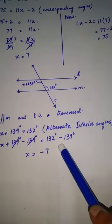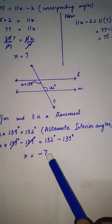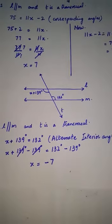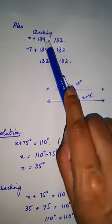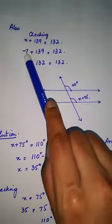when you subtract 139 on both sides, you get the value of variable x as -7. For checking, you will use the same equation: x + 139 = 132. Put the value of variable x